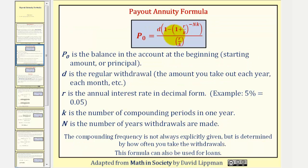Here's the payout annuity formula where P sub zero is the balance in the account at the beginning, also called the starting amount or principal. D is the regular withdrawal or the amount you take out each time period. R is the annual interest rate expressed as a decimal.